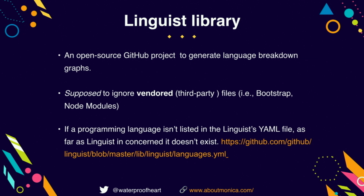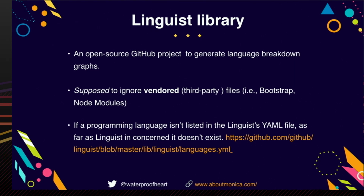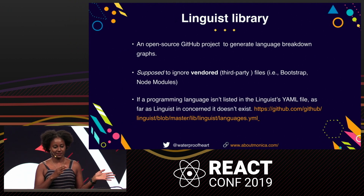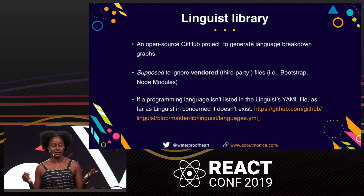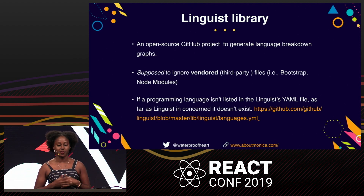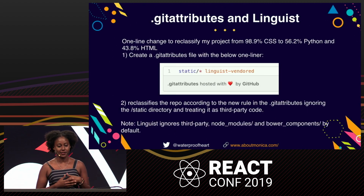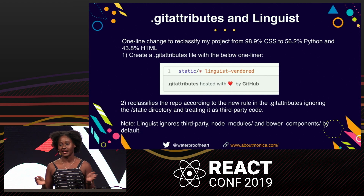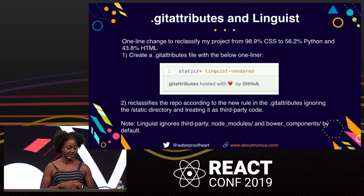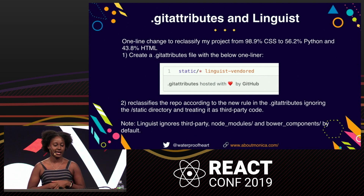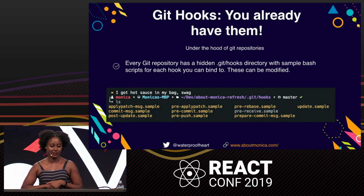Here's how that happened: I was working on a Python project and had copied some CSS, and that changed the classification. I discovered that GitHub detects languages using a library called the linguist library, which is open source — you can look at the documentation afterwards. Similar to how there's a .gitignore, there's also a .gitattributes file. Within that, you can tell the linguist library to ignore certain files. The change I made was adding a line saying anything in the static folder should be ignored by linguist.